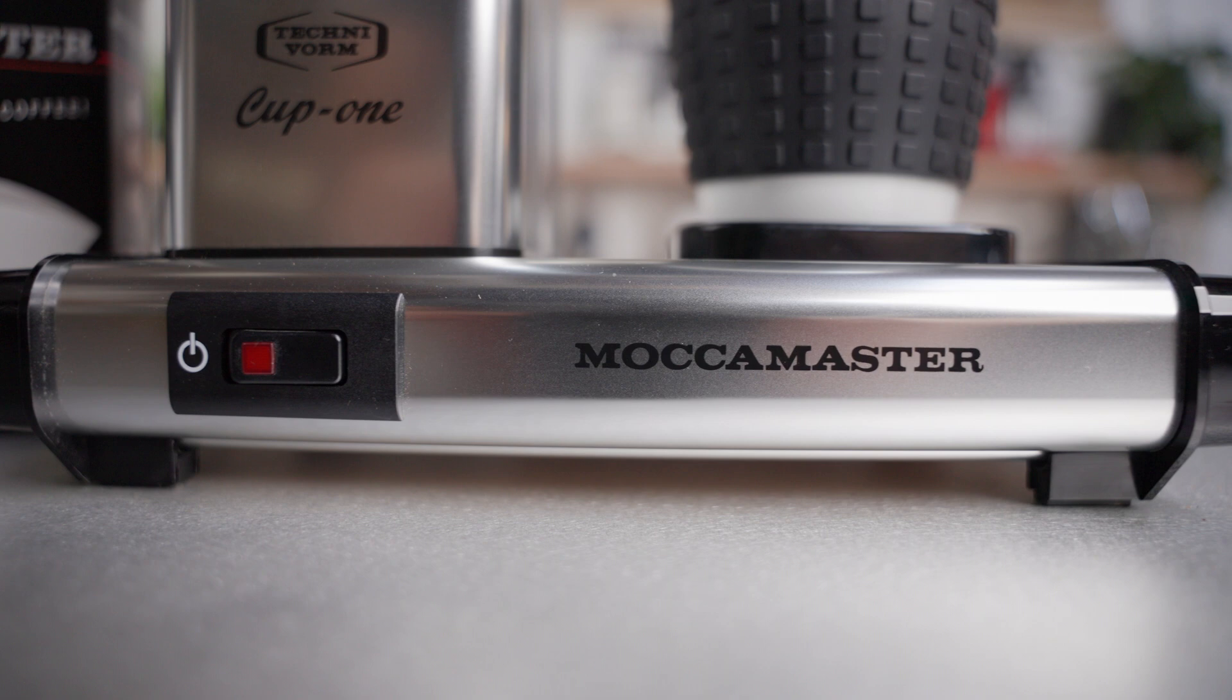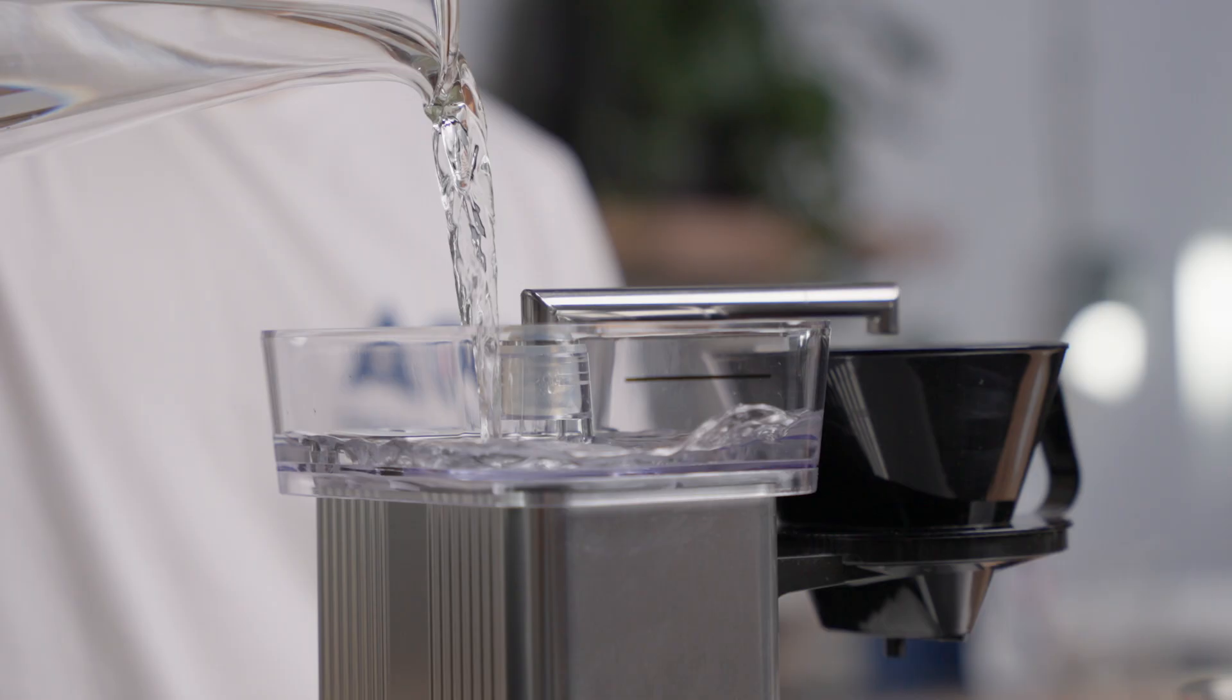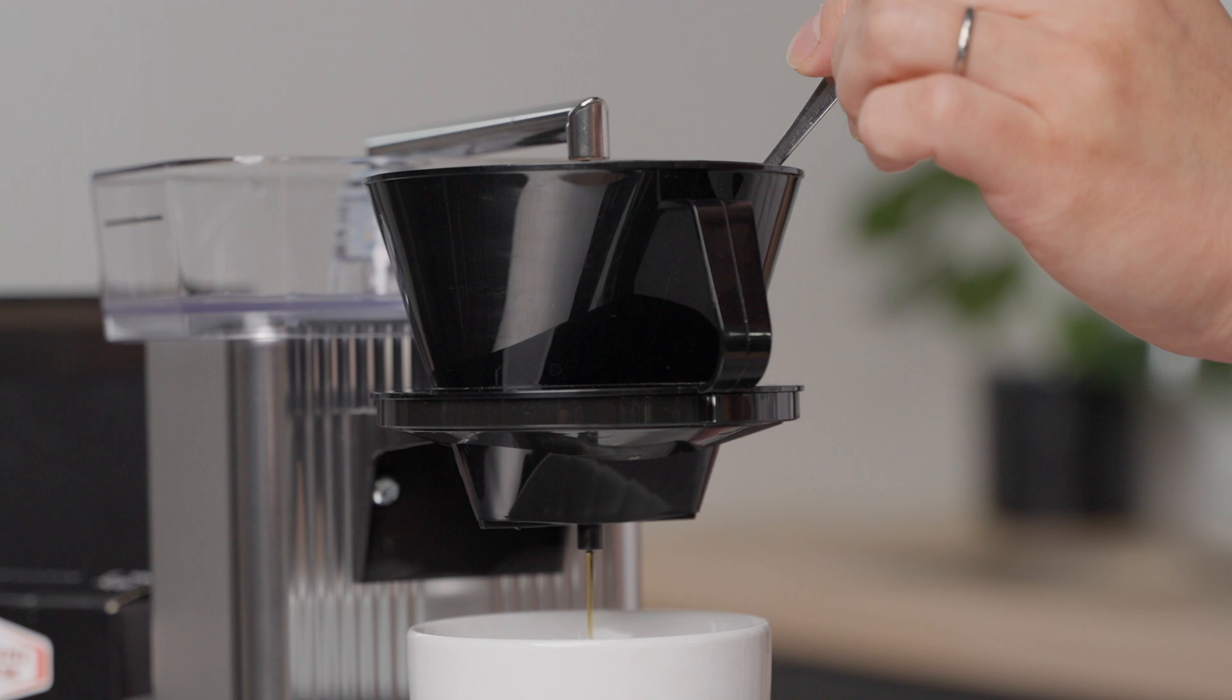The Cup 1 is a single serve brewer that makes a 10 ounce cup of coffee, an excellent alternative to pod machines. It's a sustainable choice and allows you to brew your favorite coffee one cup at a time.